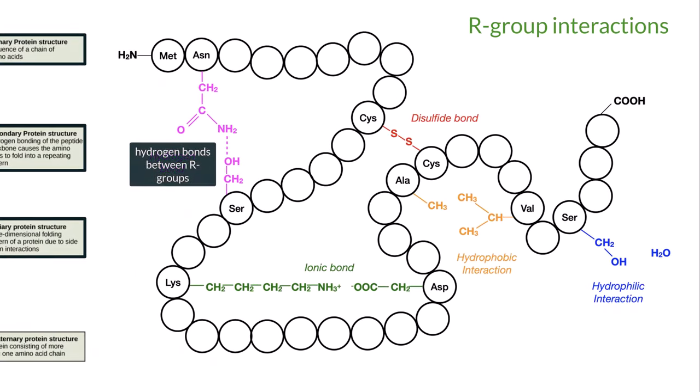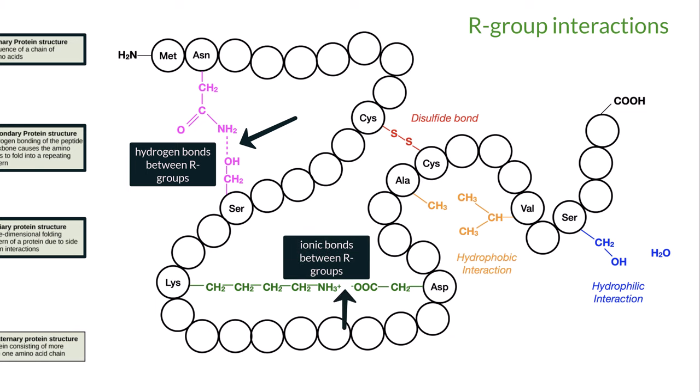Hydrogen bonds can occur between R groups of different amino acids, as we see here with asparagine and serine. Ionic bonds can be created, as seen here with lysine and aspartic acid. This occurs because both amine and carboxyl groups that are part of R group structures can become positively or negatively charged by the binding or dissociation of hydrogen atoms. With their charged states, ionic bonds can be formed.